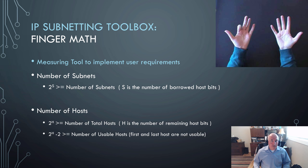Okay, finger math, pretty simple. You're going to use your fingers and we're going to solve two mathematical equations. This is a measuring tool to figure out how many bits I need to implement the user requirements. So 2^s is the number of subnets, right? S being the number of borrowed host bits, so the number of bits I need to create that many subnets.